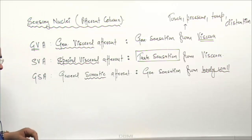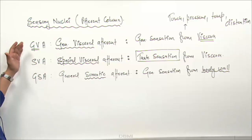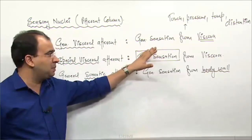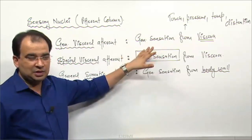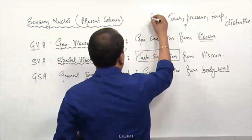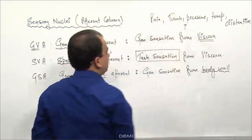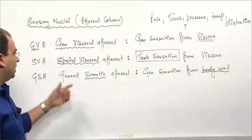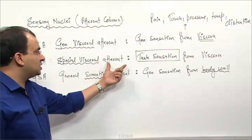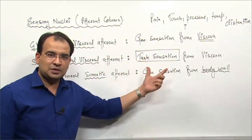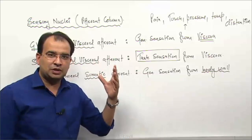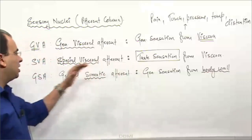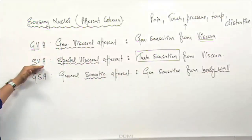Let me remind you once again: general visceral afferent - we are talking about the general sensation from the viscera, that is pain, temperature, touch, pressure. Even pain is a general sensation from the visceral organ. Special sensation from the viscera - taste - whether it is taste from the anterior two-thirds of the tongue, posterior one-third of the tongue, from the pharynx, from the tonsil, wherever you have taste buds, they are all going to come in the special visceral afferent column.